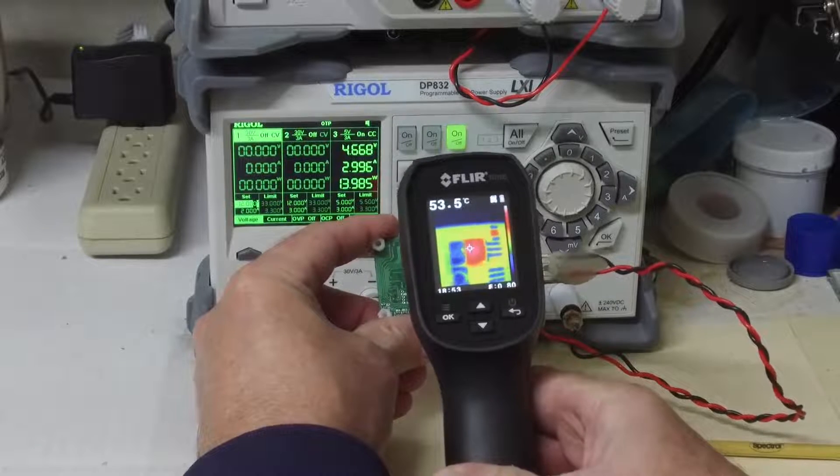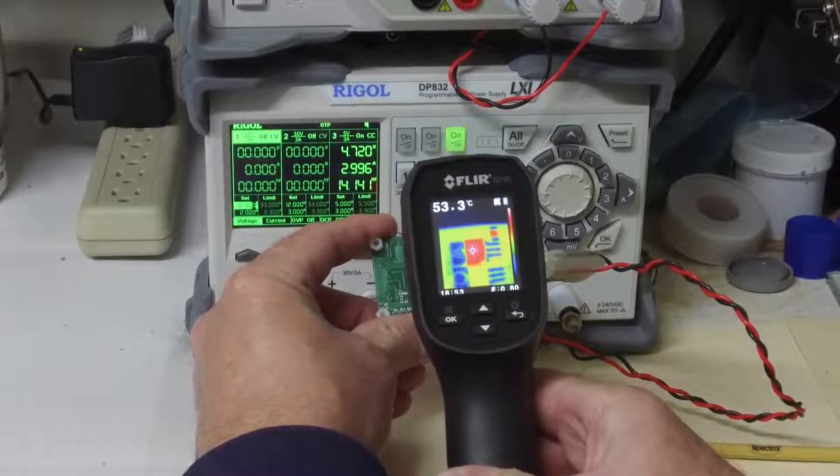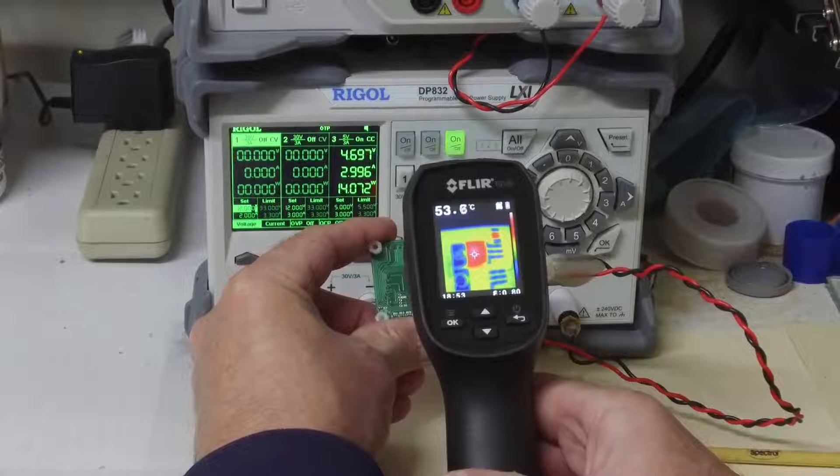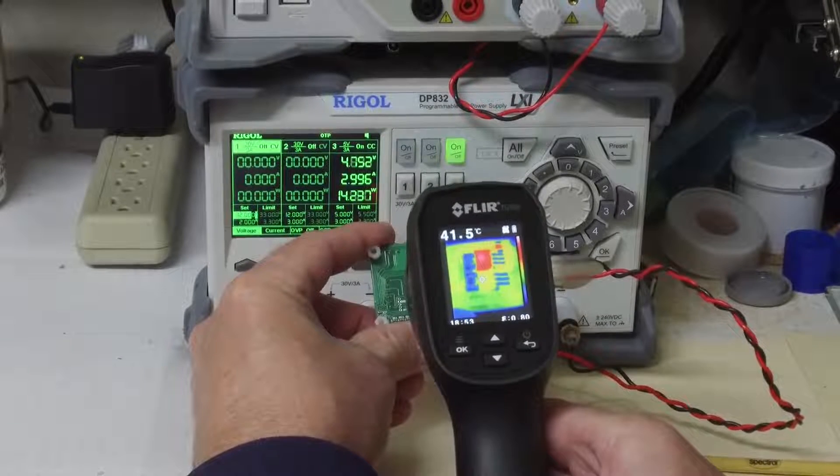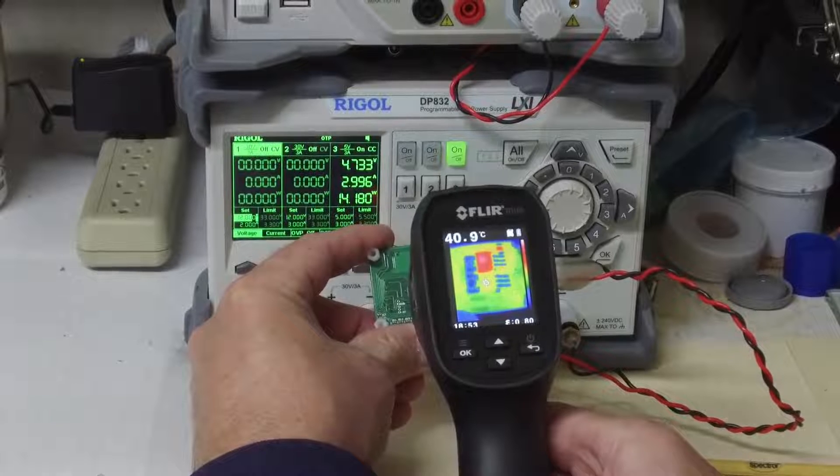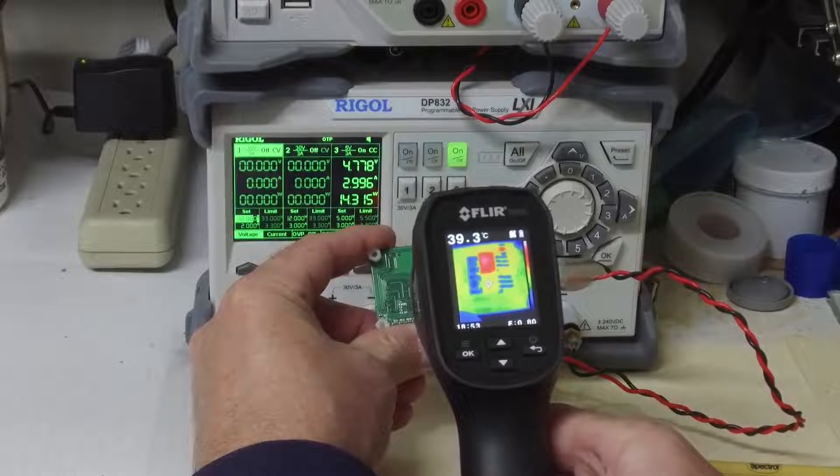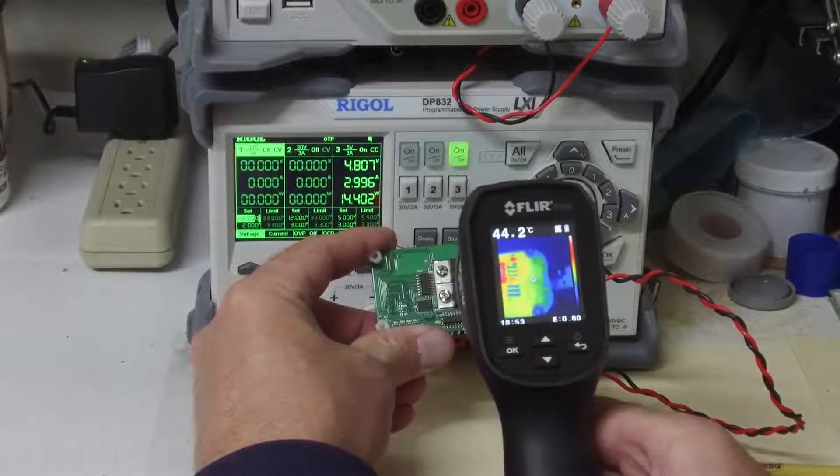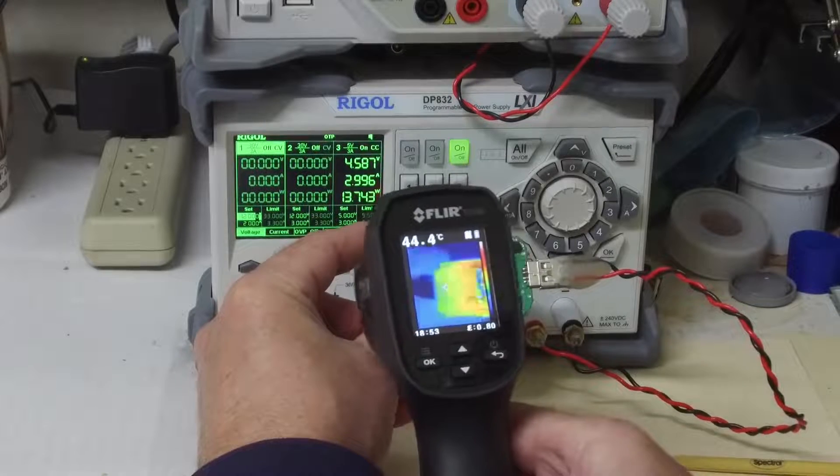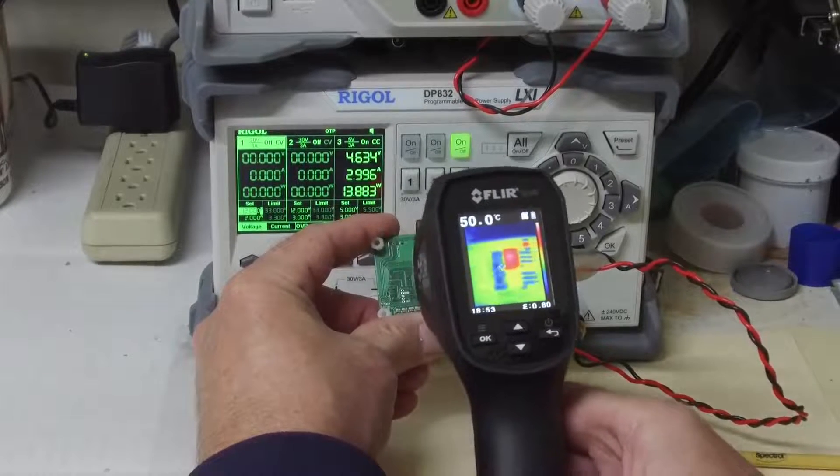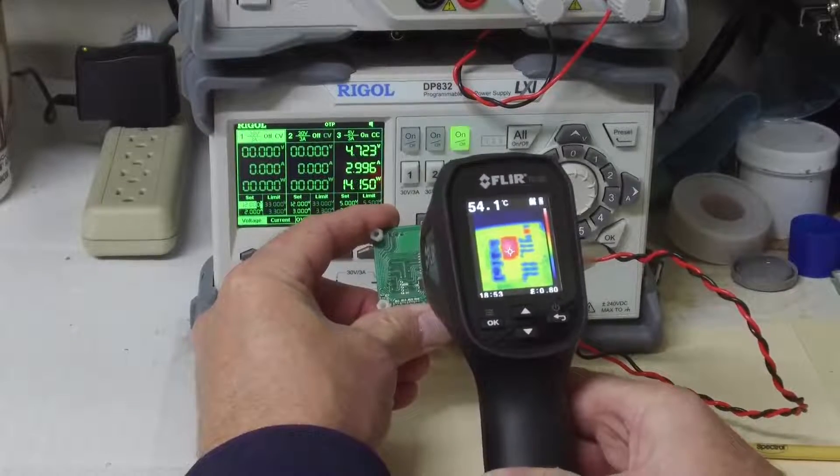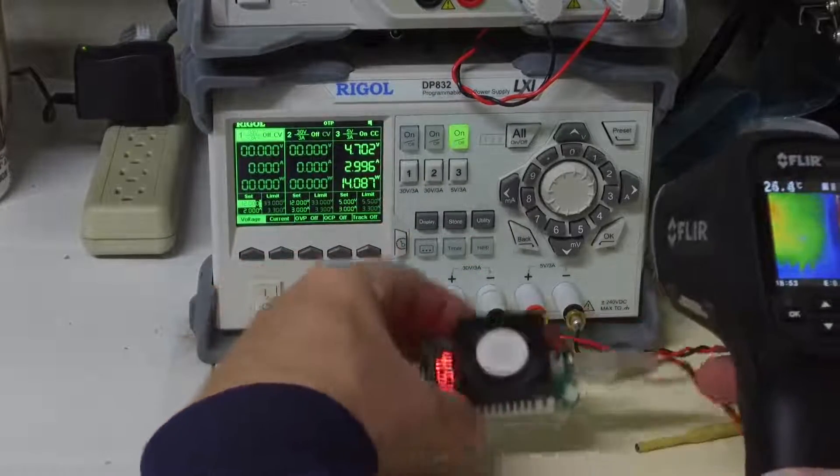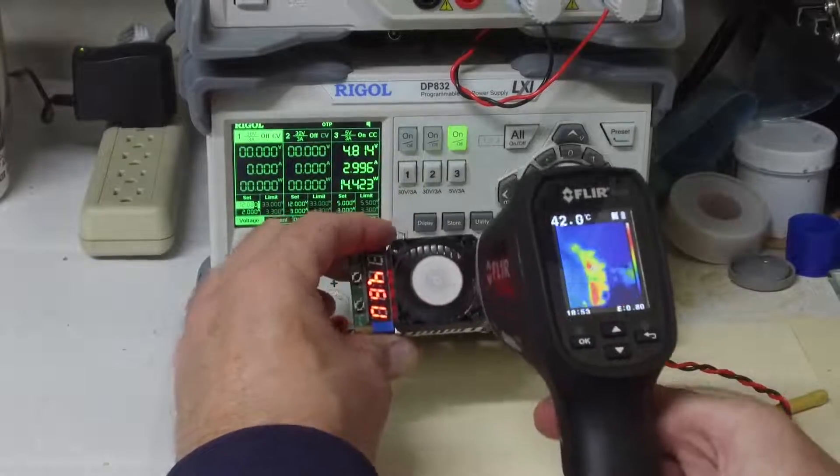Right there, that is the power transistor. That is running at roughly 54C. And the LM317 is at about 40C. And as I move around on the back side of the board, obviously the hottest thing is that power transistor.